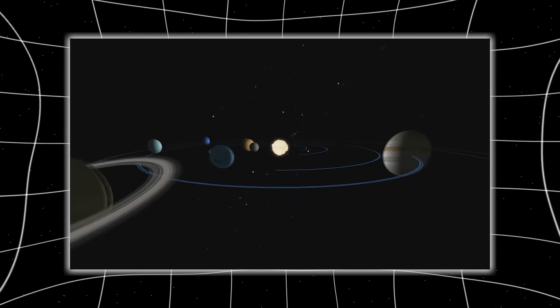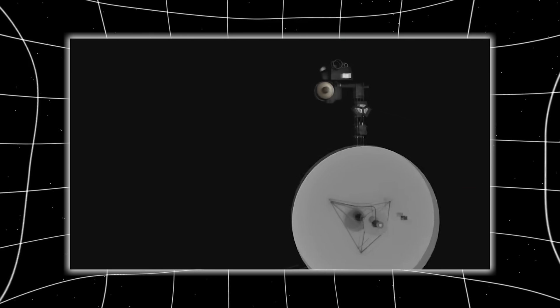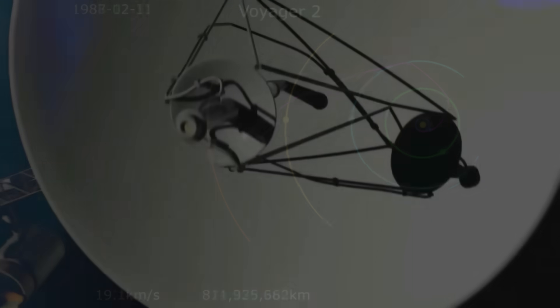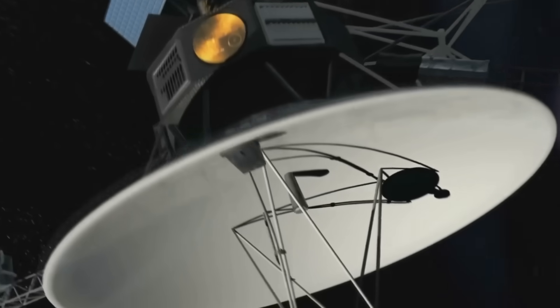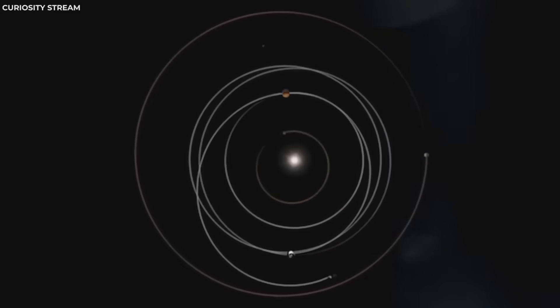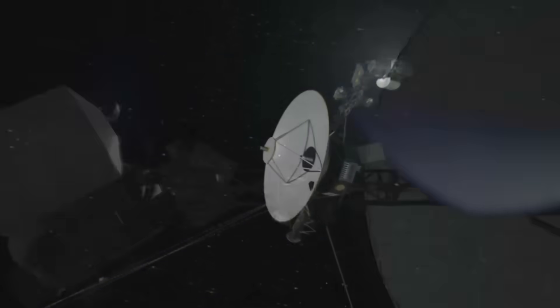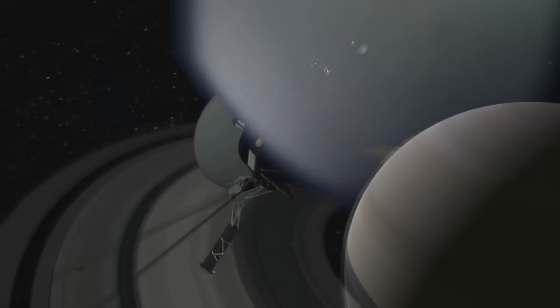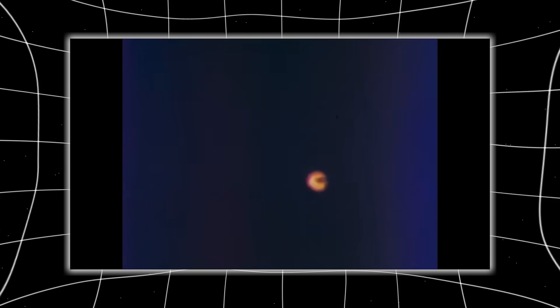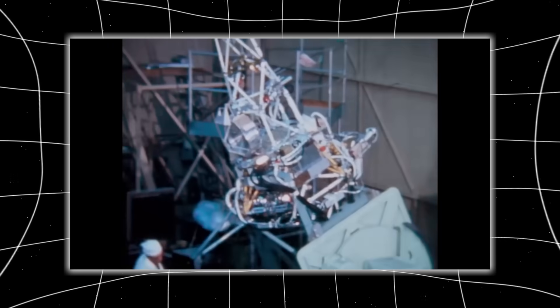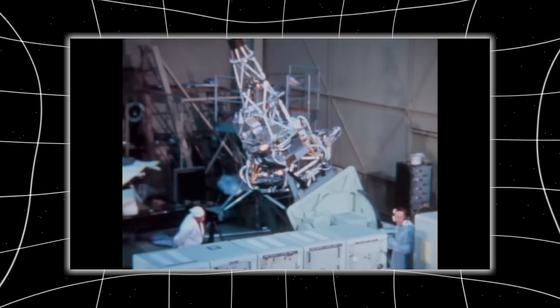But recently, NASA received a transmission so precise, so unexpected, and so deeply unsettling that it made scientists question the very architecture of our cosmic neighborhood. Because Voyager 2 didn't just cross into deep space, it discovered something hiding in plain sight.